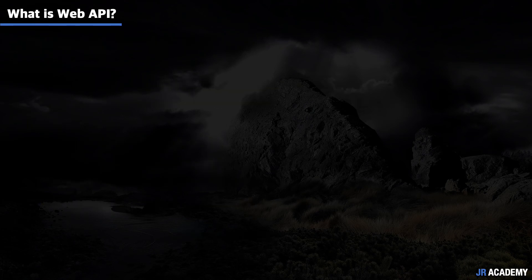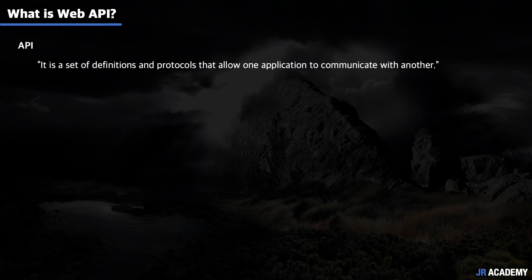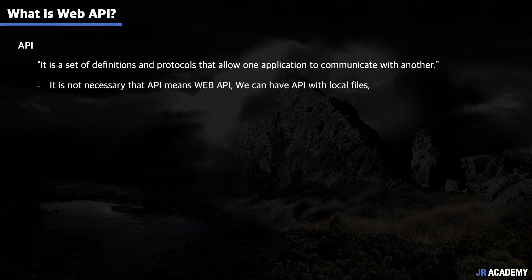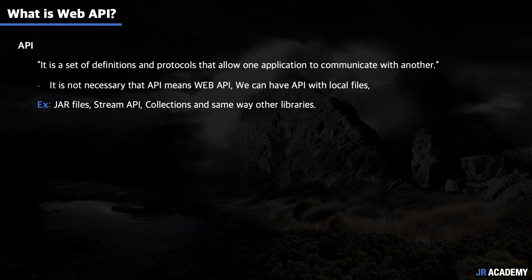The correct definition of an API is: it is a set of definitions and protocols that allows one application to communicate with another application. When we talk about APIs, people usually think about web APIs, but that is not always the case — we can have APIs with local files too. For example, JAR files are small pre-written programs used for development as an API. In Java we have Stream APIs and Collections, and in other programming languages we have libraries. These are all APIs but not web APIs. You can use those APIs to communicate with other applications or to make development faster.